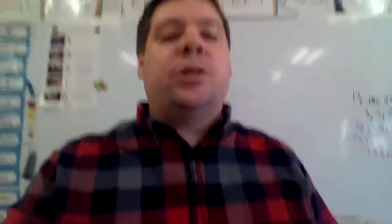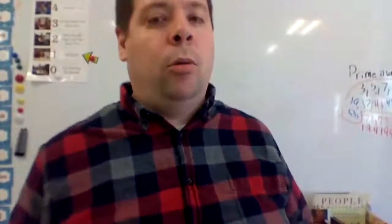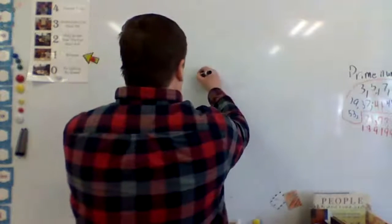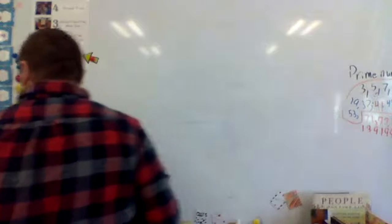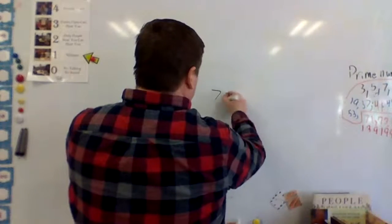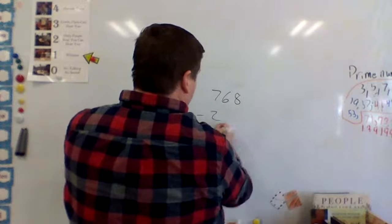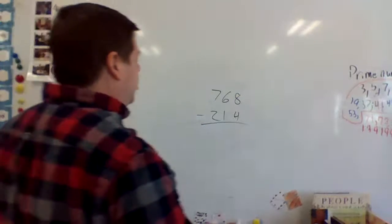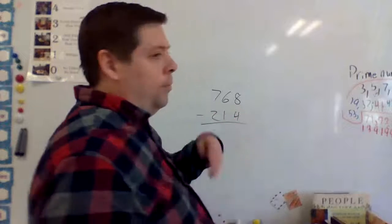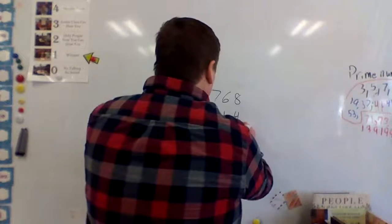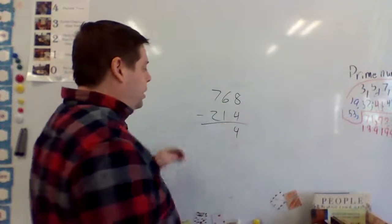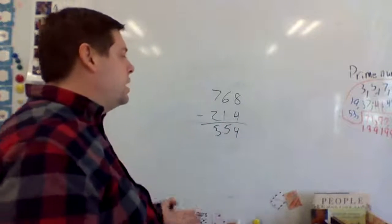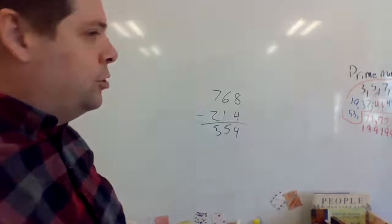So subtraction — I'll go through a basic subtraction question first. We're going to look at 768 minus 214. Eight minus four is four, six minus one is five, and seven minus two is five. So 768 minus 214 is 554.